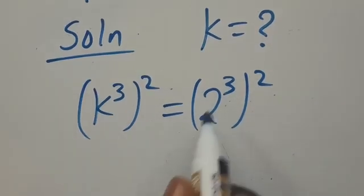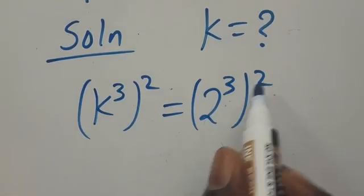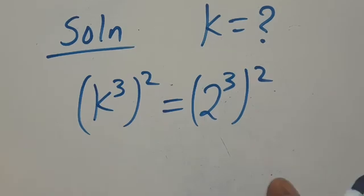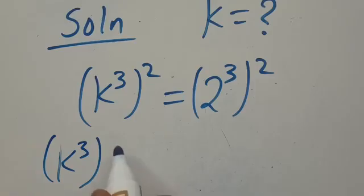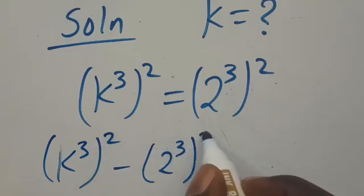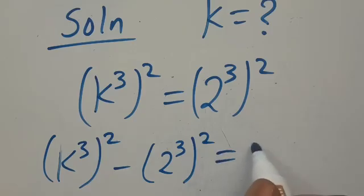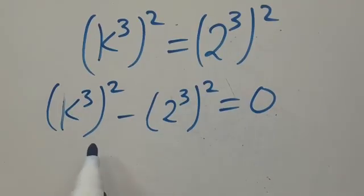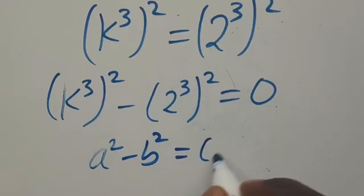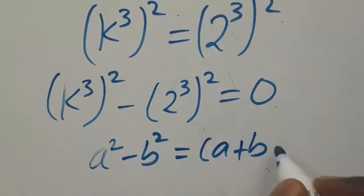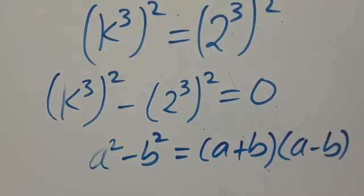Because we note that 2 times 30 gives us 6. So from here let's take the whole expression to the other side. We are going to have k to the power of 30, all in brackets, to the power of 2, minus 2 to the power of 30, all in brackets, to the power of 2, set equal to 0. This is the difference of two squares. Remember, when you have a squared minus b squared, this always equals a plus b, multiplied by a minus b, all in brackets.